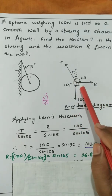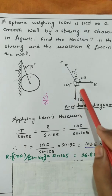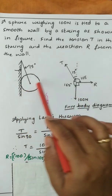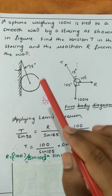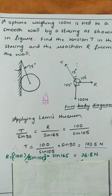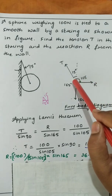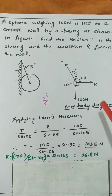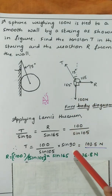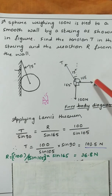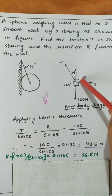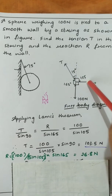The angle between reaction R and 100 N is 90 degrees, because the reaction from the wall is perpendicular to the wall and the self weight is always vertical downwards. The angle between tension T and reaction R will be 105 degrees — because the vertical and the horizontal reaction R form 90 degrees, and 90 plus 15 gives 105 degrees.